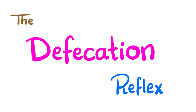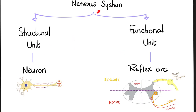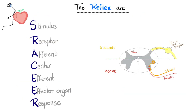Next, the defecation reflex. The structural unit of the nervous system is the neuron; the functional unit is the reflex arc: afferent, center, efferent. More elaborately: a stimulus stimulates a receptor, which carries a nerve impulse through the afferent to the center (brain or spinal cord), then efferent leaves the central nervous system and goes to the effector organ to elicit a response.